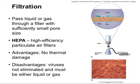They can be used to decontaminate milk or beer so that heat is not necessary. HEPA filters are high-efficiency particulate air filters; we use them to provide decontaminated airflow in hospital rooms or other sterile rooms. The advantage of filtration is that there's no thermal damage. The disadvantage is that, depending on the filter size, sometimes viruses are not eliminated, and it can only be used for liquids or gases.